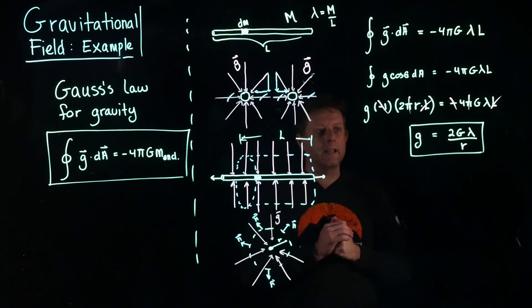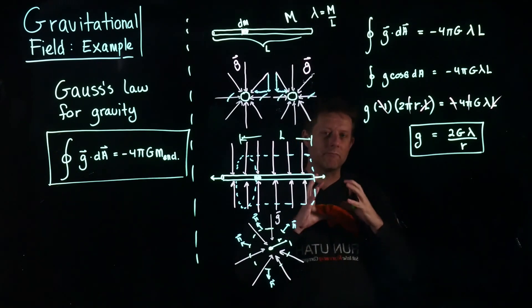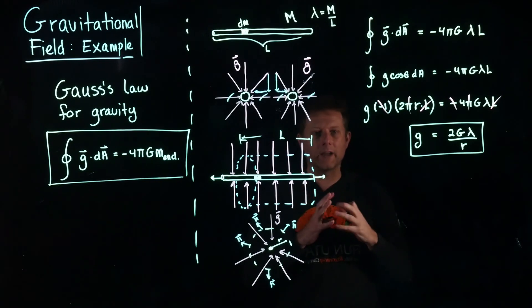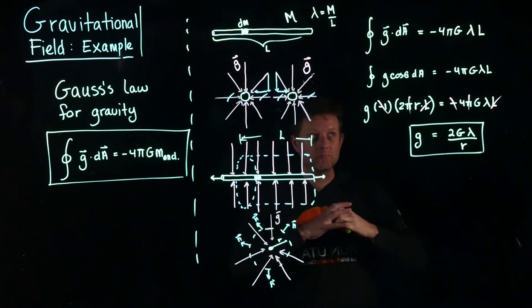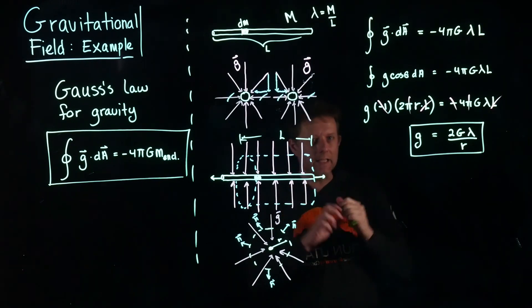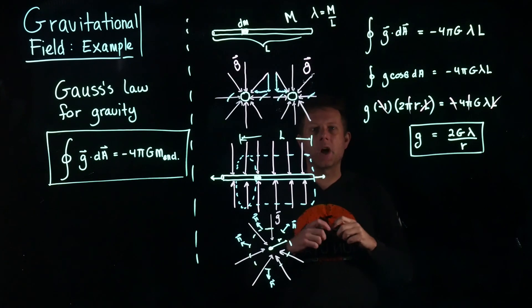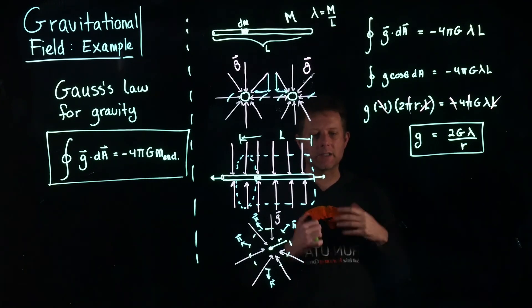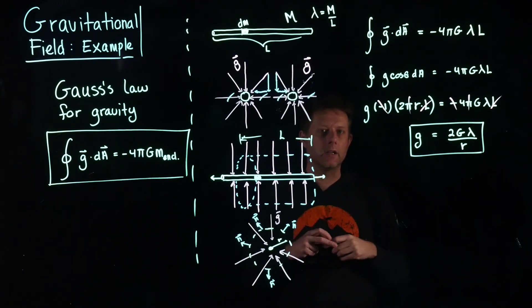This is an example of how to apply Gauss's law when we know something about the geometry of the object of interest. It's usually only when we have well-defined, easy geometries that we can actually apply Gauss's law. But conceptually it's very powerful as well, which we'll see in different examples.